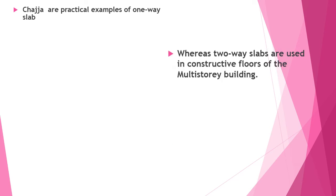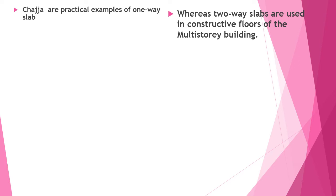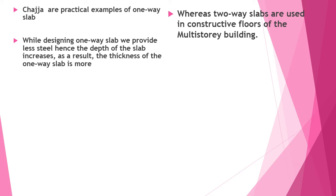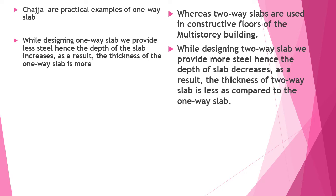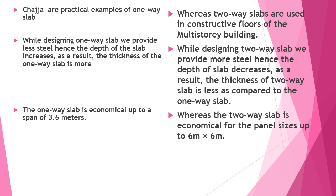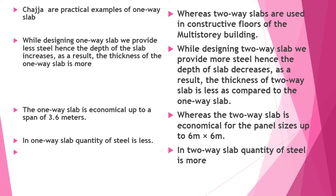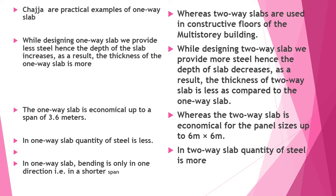One-way slabs are used for particular applications, while two-way slabs are used for floors of multi-storied buildings. In designing a one-way slab, less steel is provided, hence the depth increases and the thickness is more. In a two-way slab, more steel is provided, so the depth decreases and the slab is thinner. A one-way slab is economical for spans of three to six meters; a two-way slab is economical for a panel size of six by six meters. In a one-way slab, the quantity of steel is less, whereas in a two-way slab it is more. Bending occurs in only one direction in a one-way slab, and in both directions in a two-way slab.